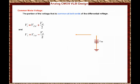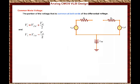V_cm is shared for both ends. One end has V_cm plus VD over 2, and on the other side, I have V_cm minus VD over 2. Remember the current is zero, so the voltage across the resistor is zero. When you calculate VD, you know that VD equals V1 minus V2. Plugging in the equations for V1 and V2, you get V_cm plus VD over 2 minus V_cm minus VD over 2, which gives you VD.